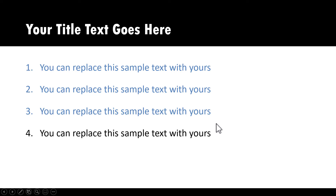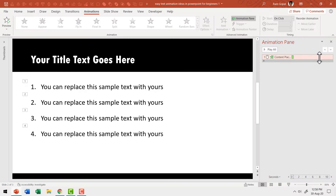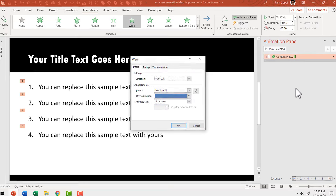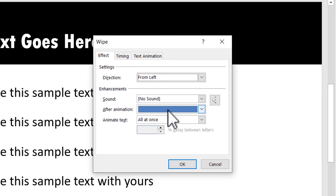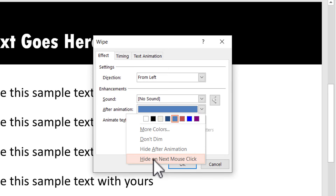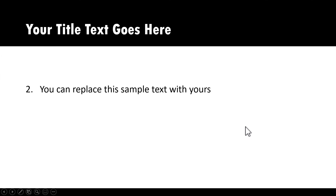If at any point you feel that having the previous text is a distraction, you can choose an option that allows the text to disappear on the next click. Go to the same animation event, click the drop-down menu, go to Effect Options, and in the After Animation effect choose Hide on Next Mouse Click. Now on a click, the first point shows; on the second click, the second point appears and the first disappears. Your audience has no other option than to stay with you as you present your points one after another.